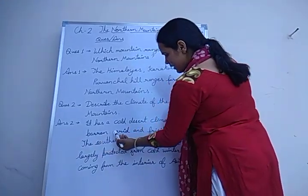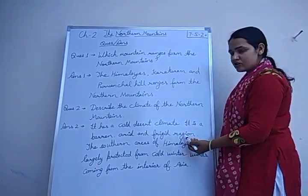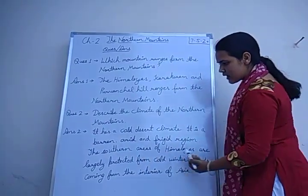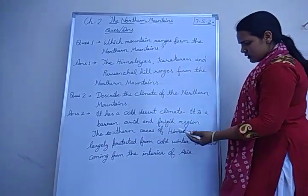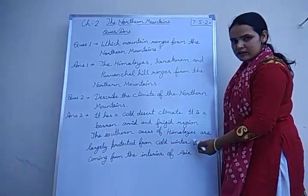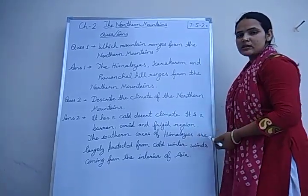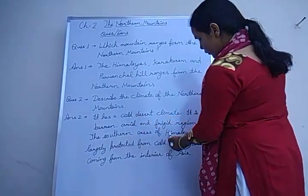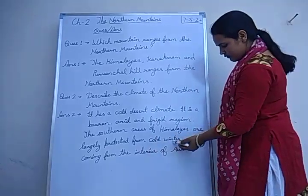The Himalayan region is a barren, arid, and frigid region — a cold desert. The southern areas of the Himalayas are largely protected from cold winter winds coming from the interior of Asia. The Himalaya ranges act as a barrier that protects us from cold winter winds, so there is not too much cold in our country.